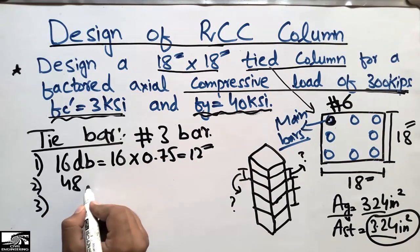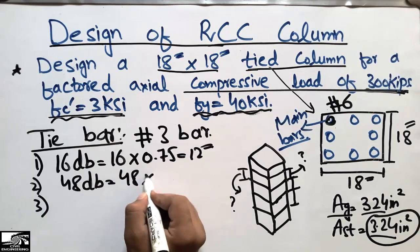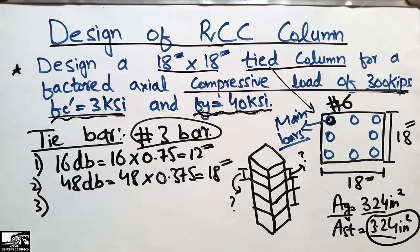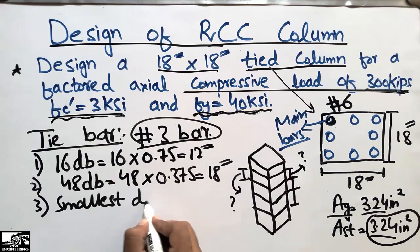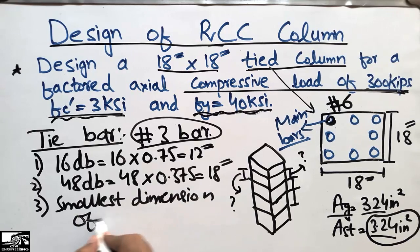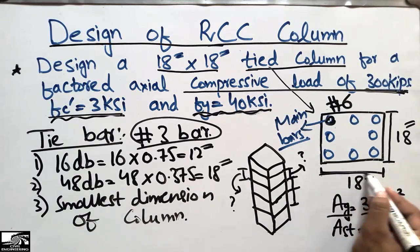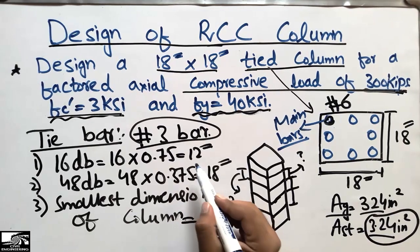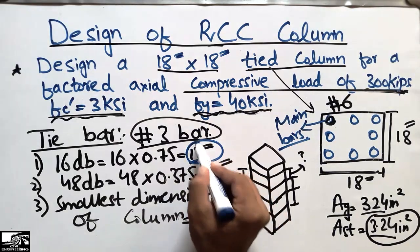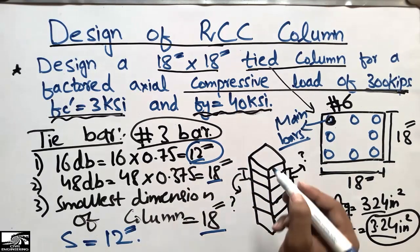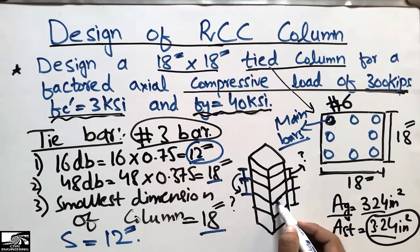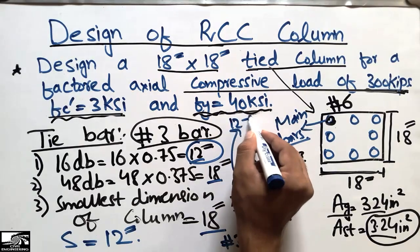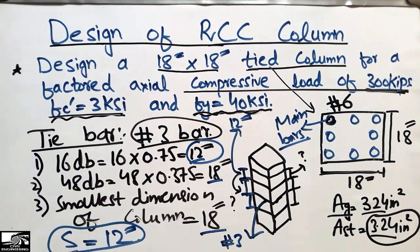Formula 2: 48 × diameter of tie bar = 48 × 0.375 in = 18 inches. (The #3 bar diameter is 0.375 in.) Formula 3: smallest dimension of the column = 18 inches. The three values are 12 in, 18 in, and 18 in. The least value is 12 inches, so the tie bar spacing is 12 inches.